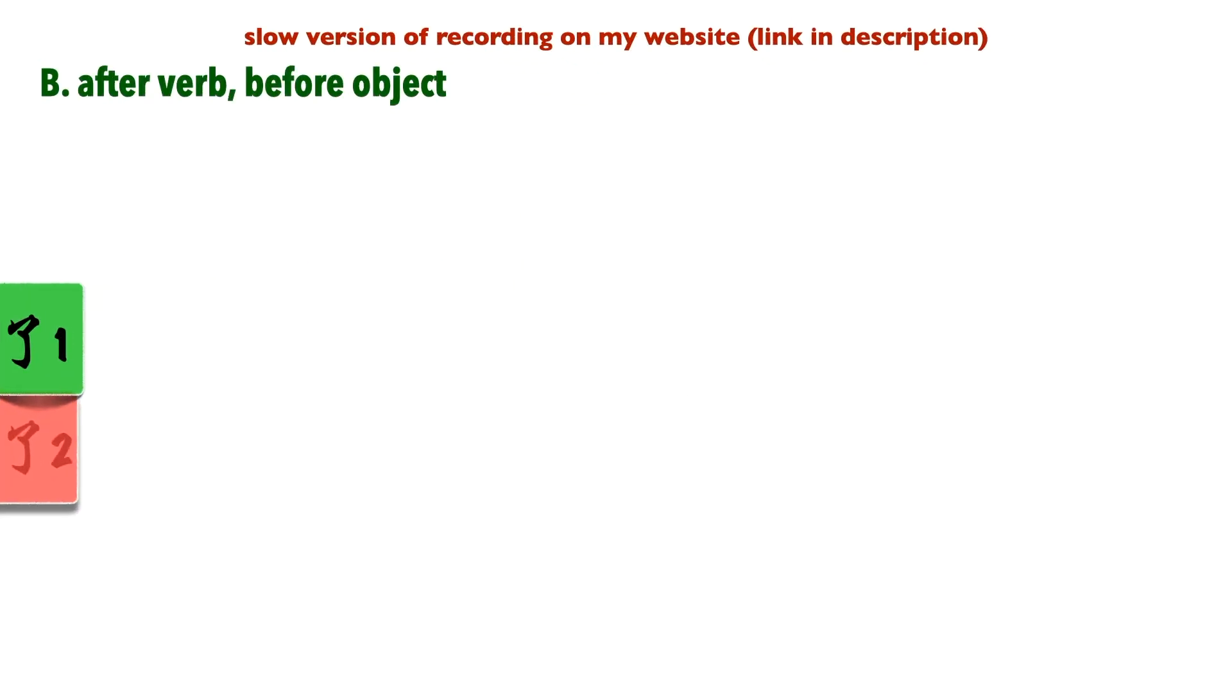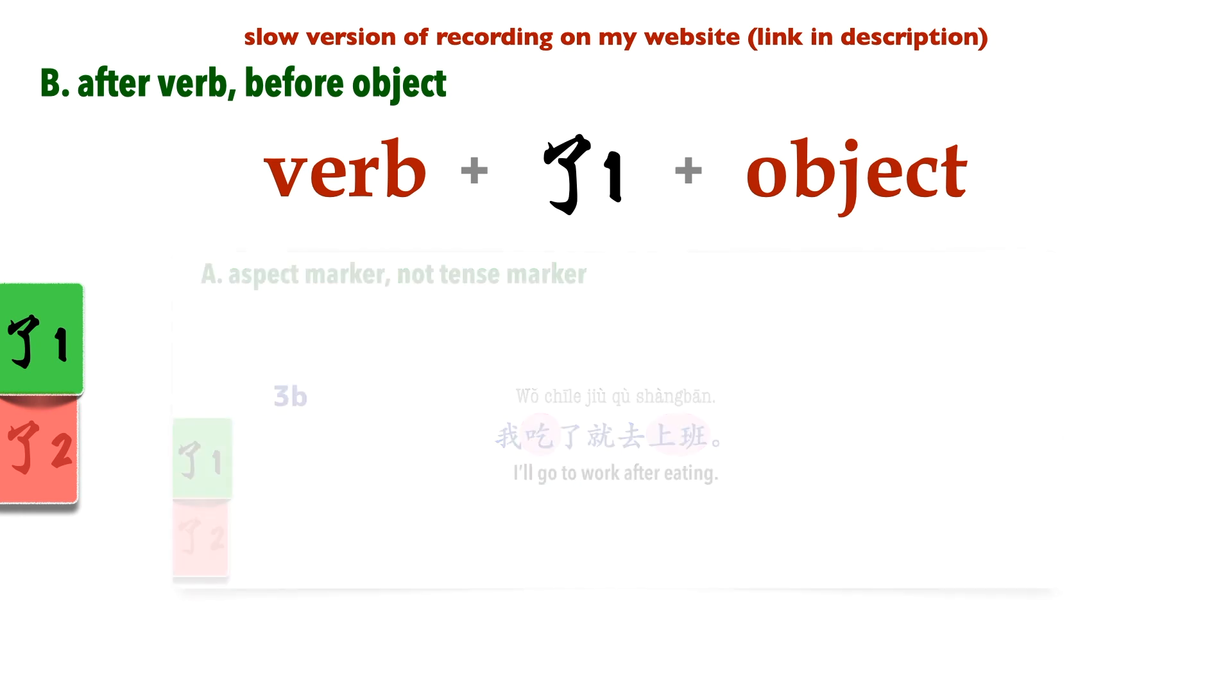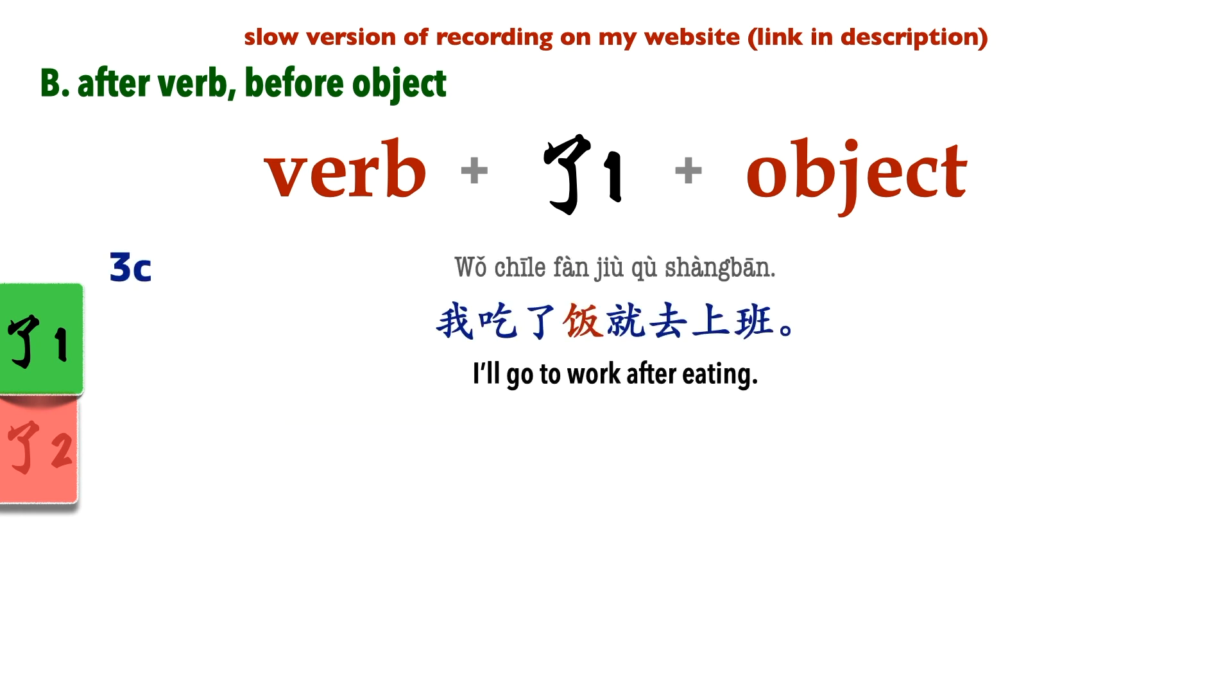After verb, before object. In most cases, 勒1 comes after the verb and before the object. Let's tweak the example a little bit more: 我吃了饭就去上班. Here, instead of just the verb 吃, we also have the object 饭. The aspect particle 勒1 comes after the verb and before the object. We don't say 我吃饭了就去上班. Actually, in spoken language, you might hear this kind of structure from time to time, but well, it's not very grammatical.